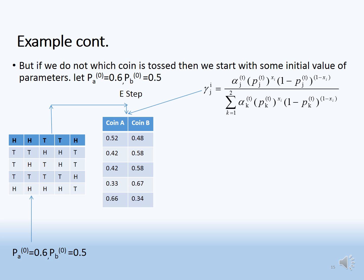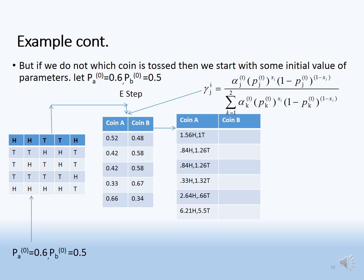We then calculate the expected number of heads and tails for coins A and B respectively. In the M-step, we compute updated model parameters by summing all expected head and tail values for each coin separately, then applying maximum likelihood: for example, p_A = 6.21H / (6.21H + 0.5T).